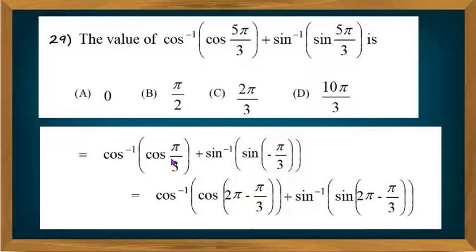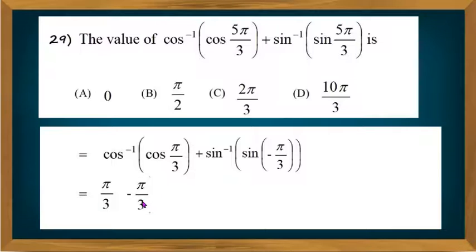Now, π/3 lies in the interval [0, π] and −π/3 lies in the interval [−π/2, +π/2]. Hence, we can apply cos⁻¹(cos x) = x and sin⁻¹(sin x) = x. This gives π/3 + (−π/3), and π/3 − π/3 = 0.